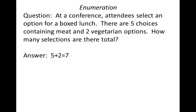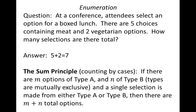This illustrates something actually quite sophisticated in enumeration. We have what's called the sum principle — I prefer to call it counting by cases, because that's what it really boils down to. If we have m options for a selection of type A and n options for a selection of type B, and the types are mutually exclusive, then a single selection made from either type gives m plus n total options. By mutually exclusive, we mean there is no overlap between the two types.